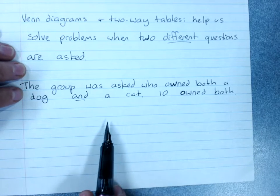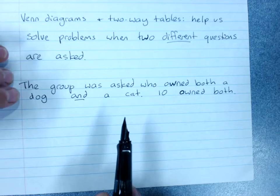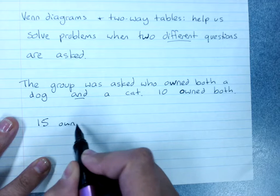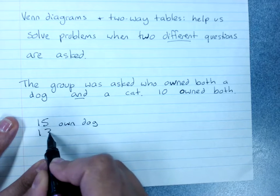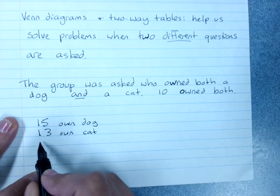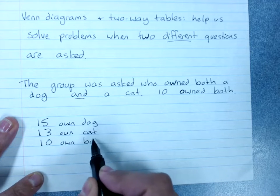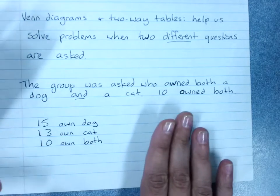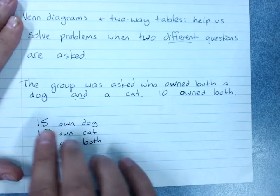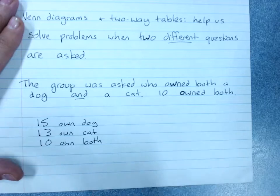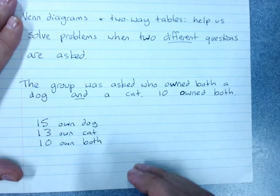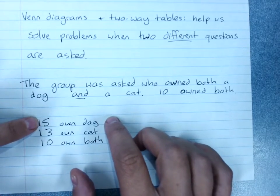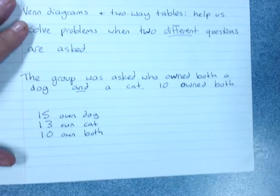So then we asked, well who owns both a dog and a cat? And ten of them owned both. So that is fifteen own a dog, thirteen own a cat and ten own both. You've got to remember in Venn diagrams and two-way tables, when they say fifteen people own a dog or thirteen people are wearing their blazer or twenty-one people rode their bike to school, that's everybody in that group who did those things. It's not leaving out the both.